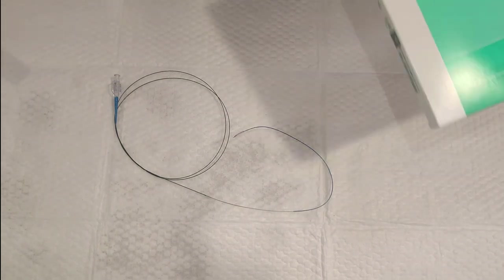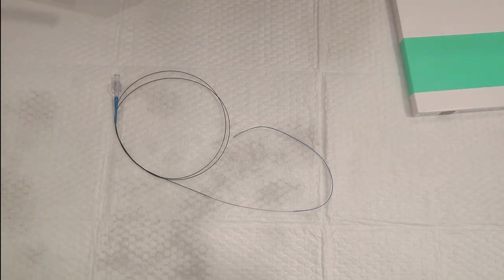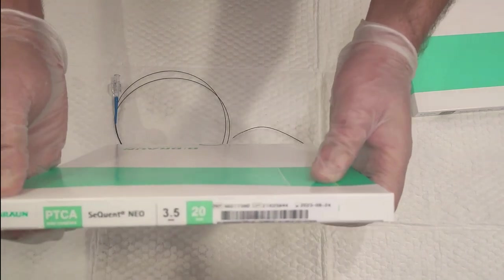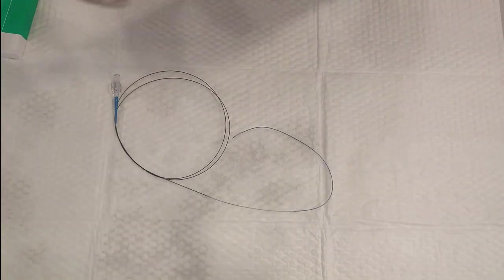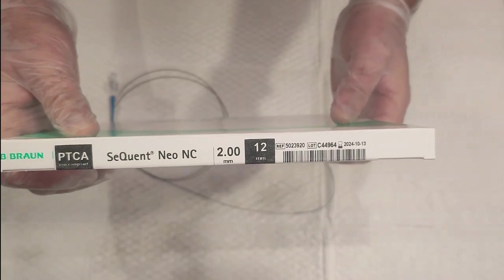In coronary balloons there are two kinds - one is a compliant balloon and one is a non-compliant balloon. This is a compliant balloon, or it comes with a semi-compliant balloon as well. Here is another balloon which is called a non-compliant balloon, which is a high pressure balloon as compared to the compliant.